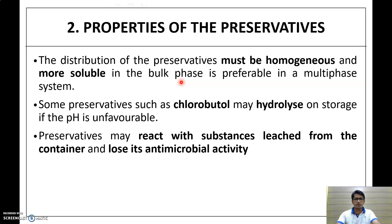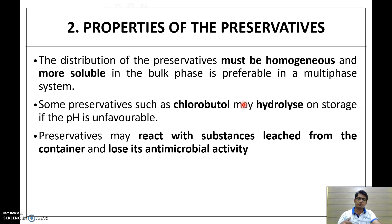The second factor is the properties of the preservative. The distribution of the preservative must be homogeneous and it should be more soluble in the bulk phase, which is preferable in a multiple-phase system. Some preservatives such as chlorobutanol may hydrolyze on storage if the pH is unfavorable. Sometimes a preservative may react with substances leached from the container and lose antimicrobial activity. Preservatives that are more soluble will give a greater effect.